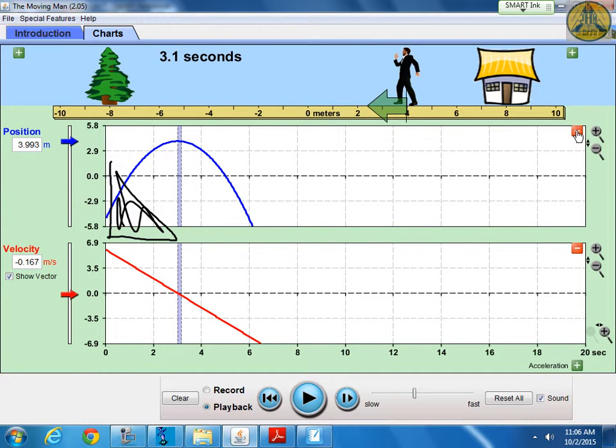So this position time graph, its top value, what is that? It's about four, 3.993. So if I did the area of this triangle, let's see, height of, what did I start, what the starting velocity was, six. The base here looks like three.